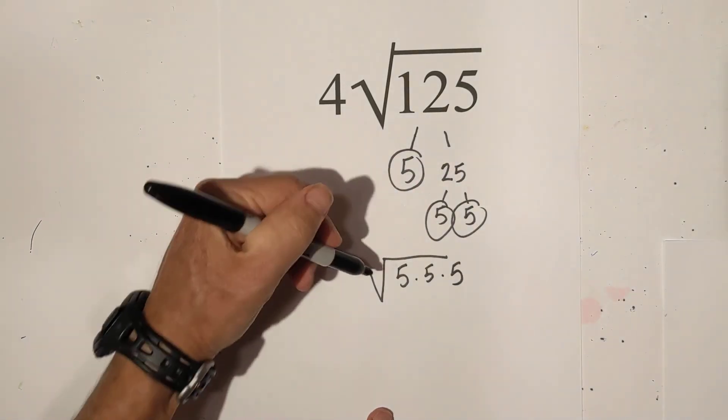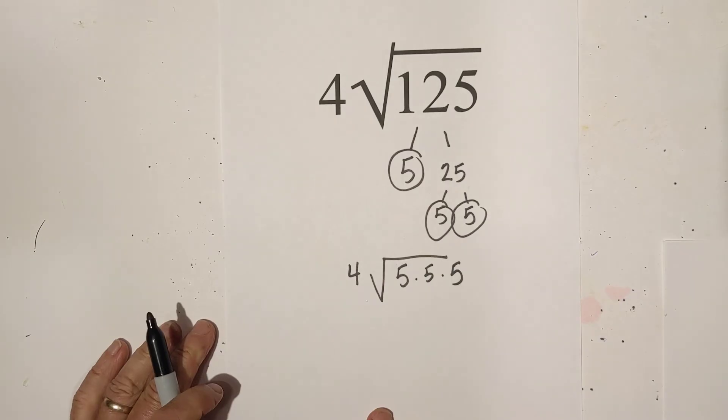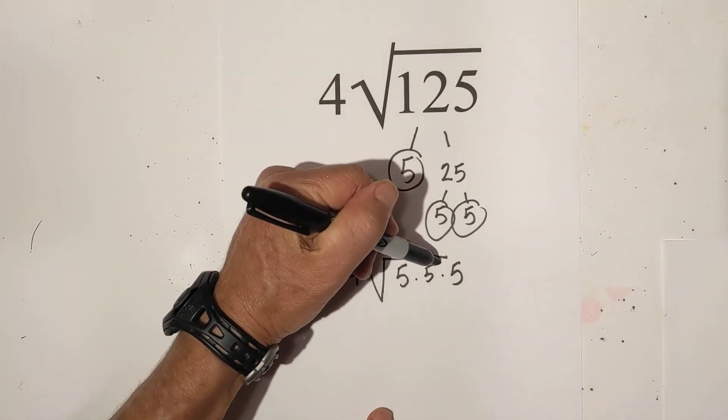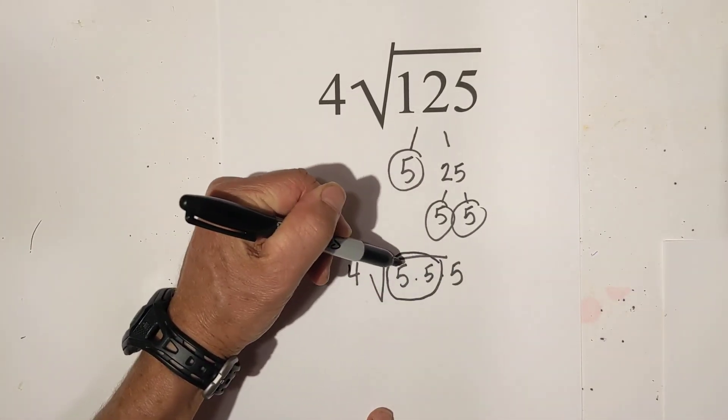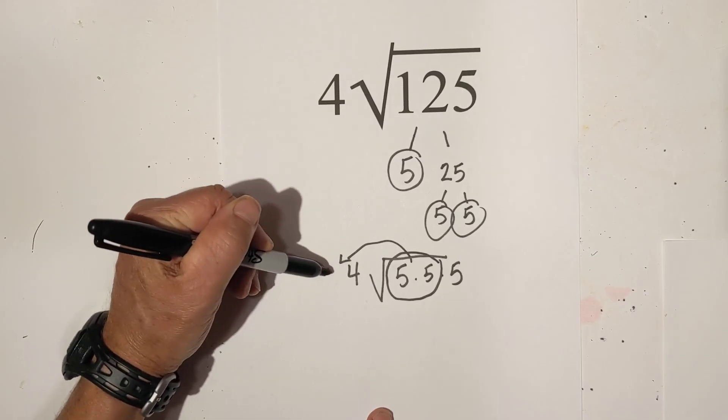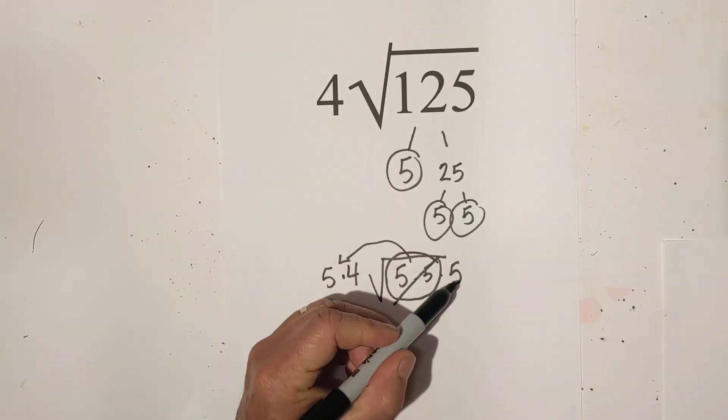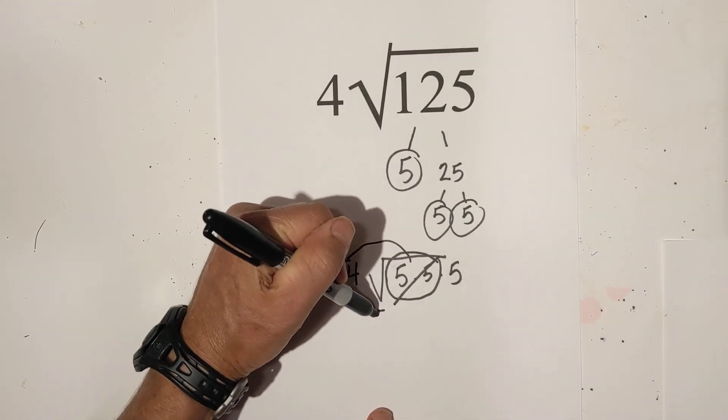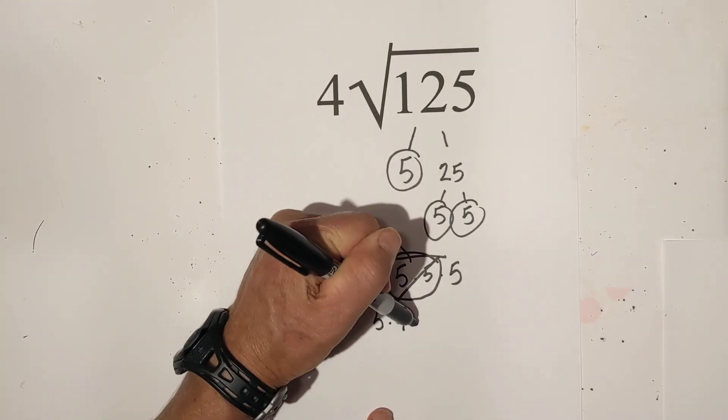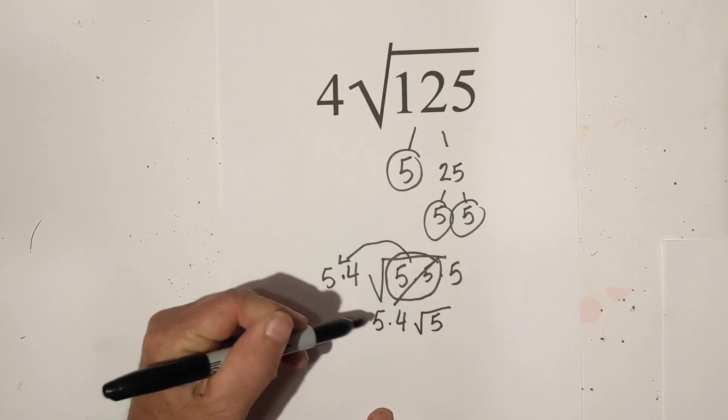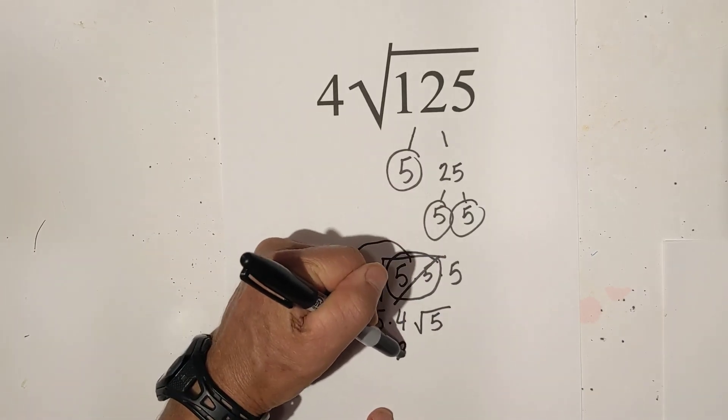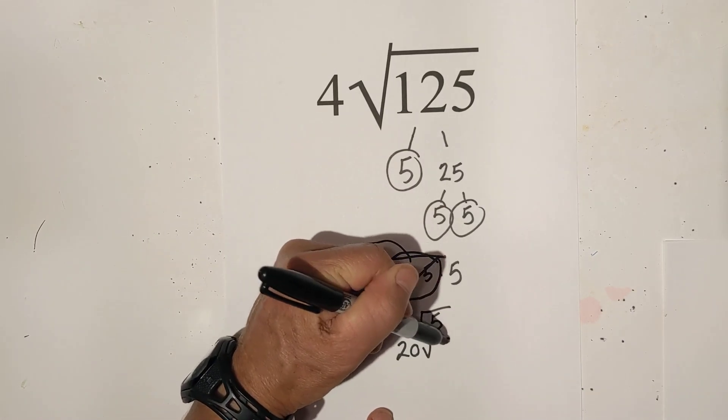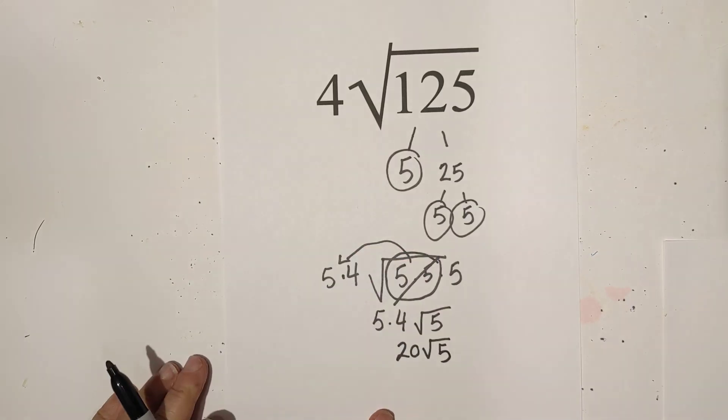Five times five times five. And we have four on the outside. Now we're going to pull out a pair, which is a five. So now we have five times four. And then we have five on the radical sign. So let's rewrite it. We have five times four square root five. Five times four is twenty square root five.